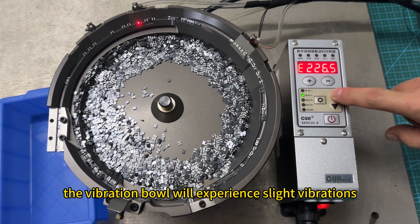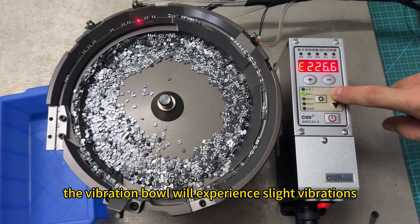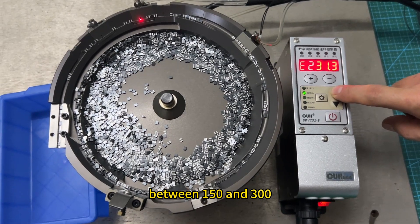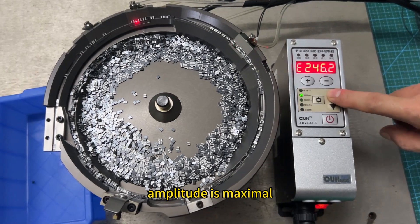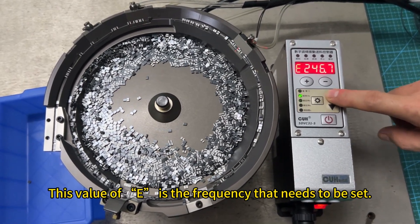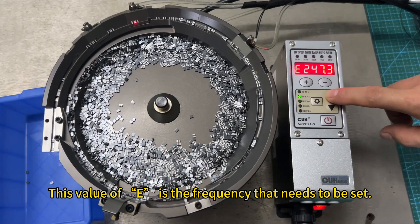The vibration bowl will experience slight vibrations. Between 150 and 350, there will be a value where the vibration amplitude is maximal. This value of E is the frequency that needs to be set.